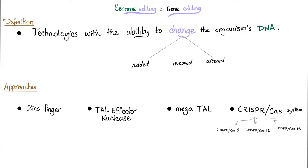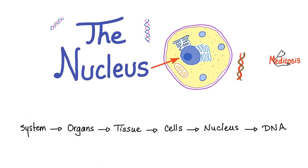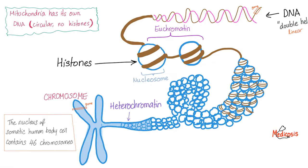This sounds so complicated, so let's make it simple. Dr. Stephen Covey once said, begin with the end in mind. What are you trying to achieve? Let's go back to square one. Your body is made of systems. Each system has organs. Each organ has a group of tissue, and each tissue has cells. Each cell has a nucleus. Each nucleus has DNA, and DNA has genes. So the cell has a nucleus, and the nucleus has chromosomes — about 46 of them, assuming it's a somatic cell.